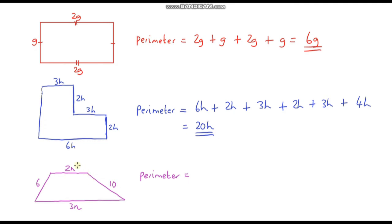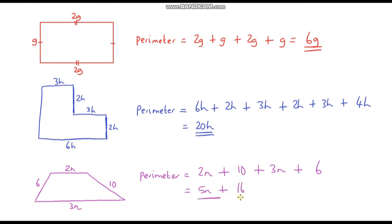For the trapezium, starting at the top: 2n plus 10, then the base which is 3n, then the slanted side which is 6. Simplifying — 2n plus 3n gives 5n, and 10 plus 6 gives 16 — so the perimeter is 5n plus 16. We cannot simplify further as 5n and 16 are not like terms. That's it for this video; in the next one we'll look at solving equations using perimeter.